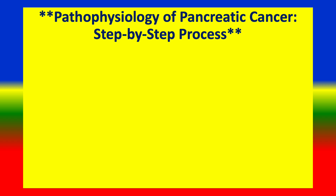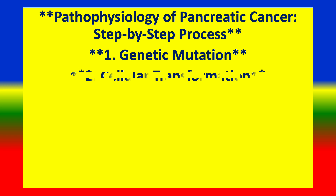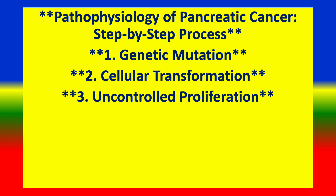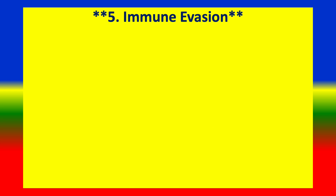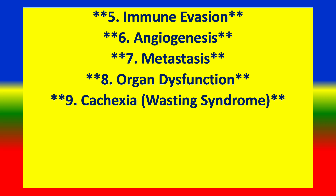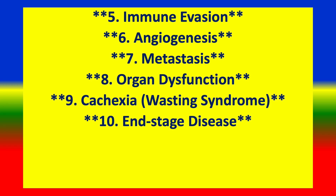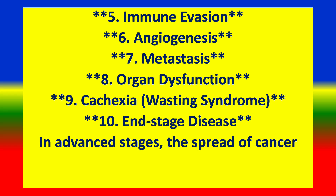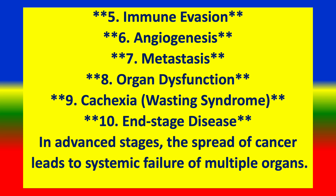The pathophysiology of pancreatic cancer follows a step-by-step process: (1) genetic mutations, (2) cellular transformation, (3) uncontrolled proliferation, (4) local invasion, (5) immune evasion, (6) angiogenesis, (7) metastasis, (8) organ dysfunction, (9) cachexia and wasting syndrome, and (10) end-stage disease, where the spread of cancer leads to systemic failure of multiple organs.